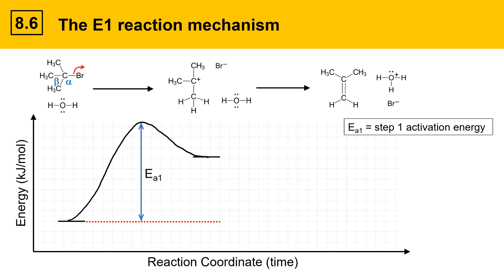In the second step of the reaction, the fast reaction, the base deprotonates the carbocation to give the alkene. That gives products which are represented by a line on the graph down here.